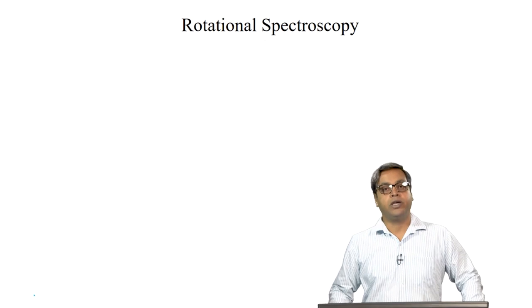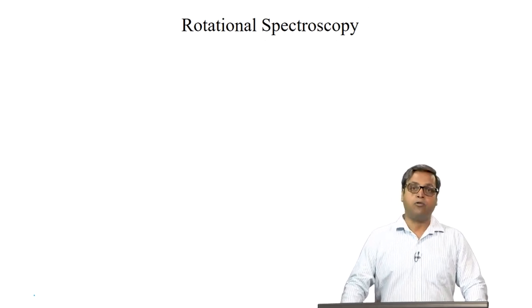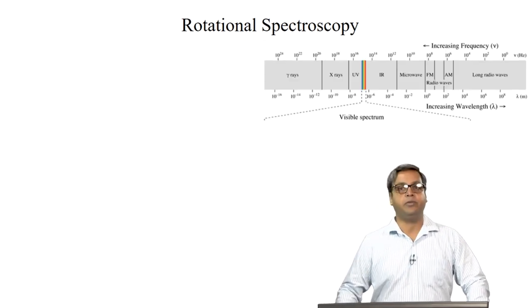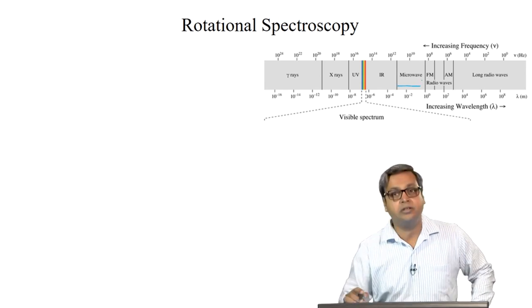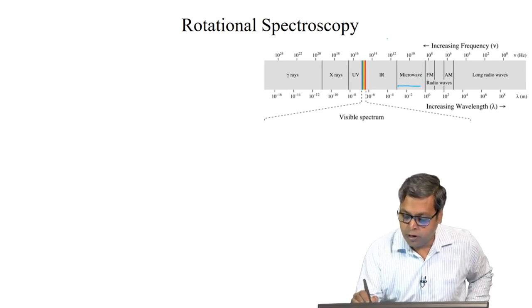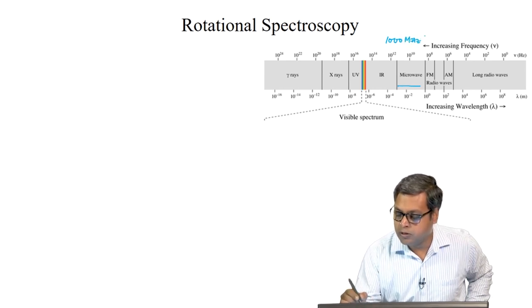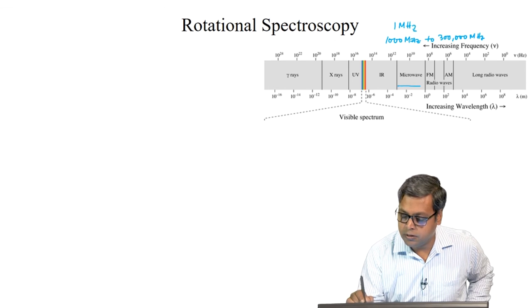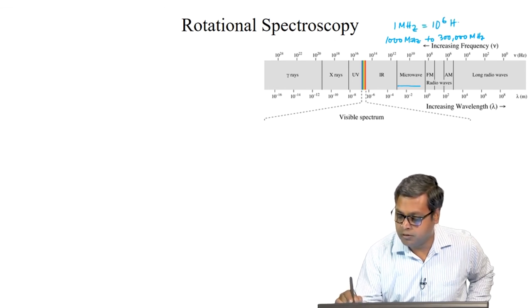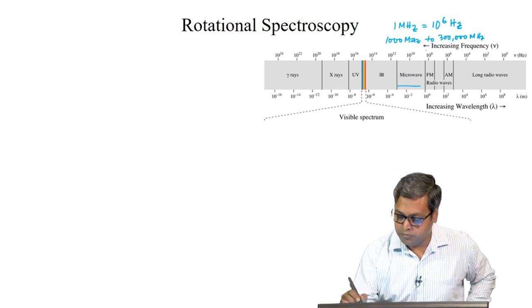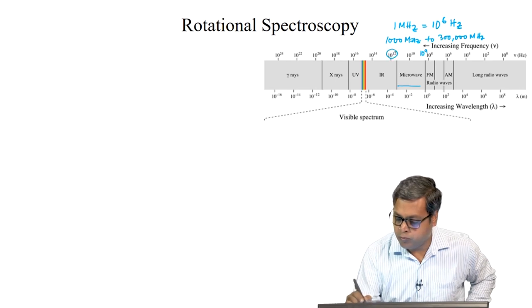As we have already discussed before, we can have rotational spectroscopy in the microwave region of the electromagnetic spectrum. Let us look into the electromagnetic spectrum again. This is the microwave region. The frequency range for the microwave electromagnetic region is from 1000 megahertz to 300,000 megahertz, and we know that 1 megahertz equals 10 to the power 6 hertz. Roughly speaking, the microwave region falls between 10 to the power 9 to 10 to the power 12 hertz.